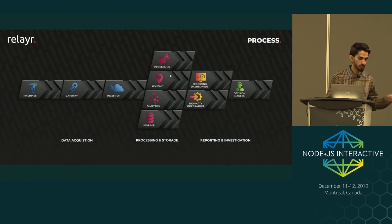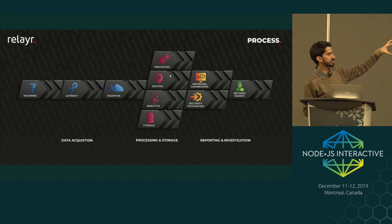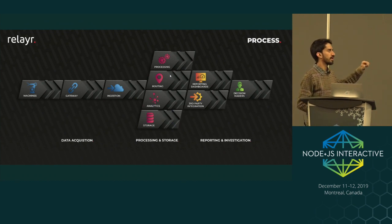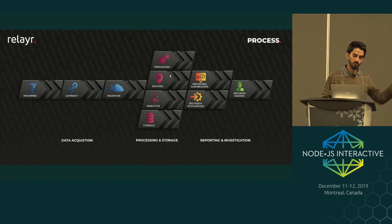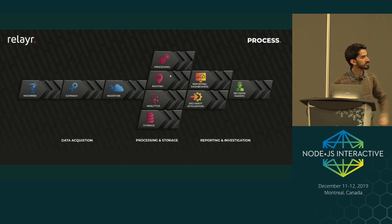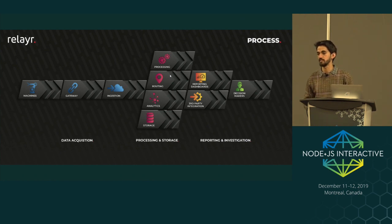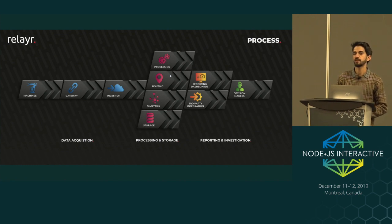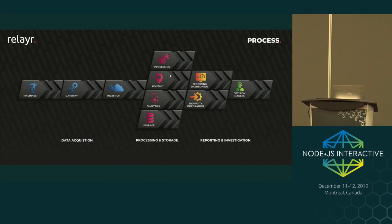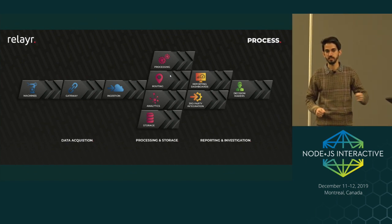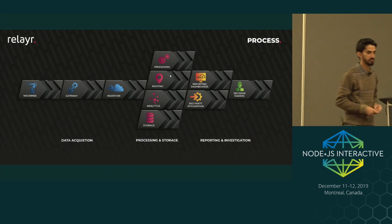Our process is like this: we have some sensors on machines, then there's a gateway, and then we ingest the data in our cloud where we do processing, analytics, and storage. Then we have dashboards and mobile apps where the client can see what's happening with their devices. This puts us in a situation where we deal a lot with asynchronous communication from devices sending data through MQTT, Kafka, or even HTTP protocols.